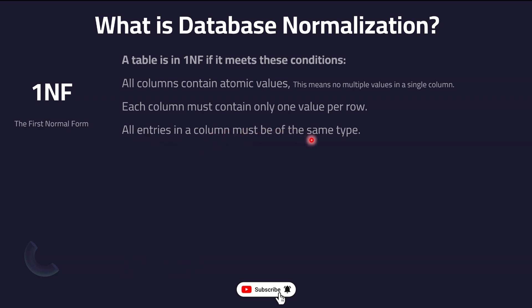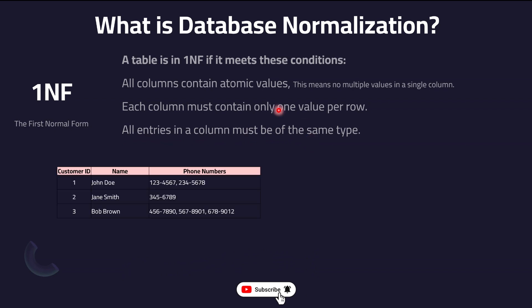For example, if you have a column and one row has a string while another row has an integer, that will not work at all. Let's look at an example: a small table with customer ID, customer name, and phone number. If you look closely, John Doe has two phone numbers stored in the same column — that is completely wrong and not following the 1NF rule.